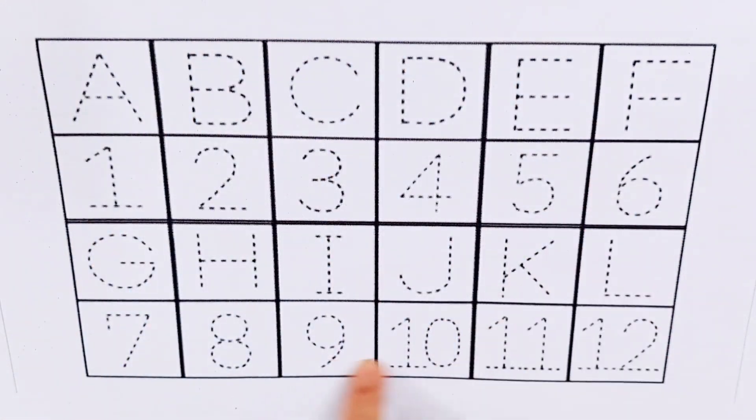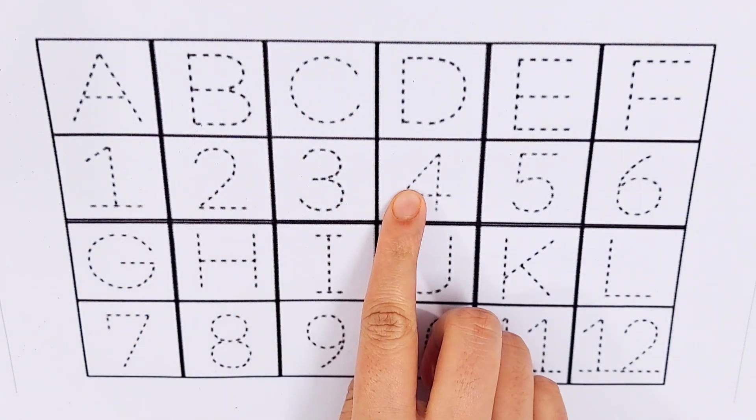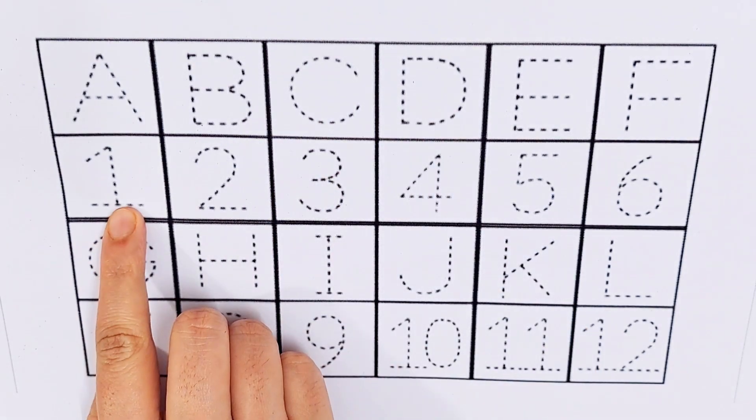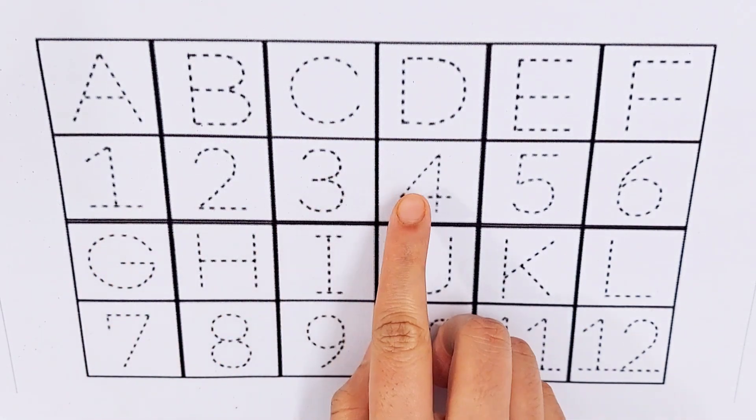Let's try to learn some alphabets and numbers. A, B, C, D, one, two, three, four.